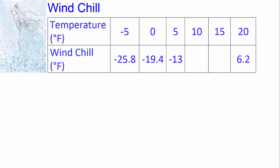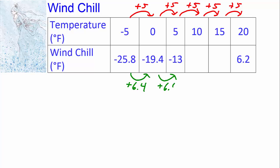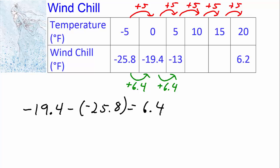The top row is going by 5s and the bottom row is going by 6.4. We could actually figure that out using subtraction. To go from negative 25.8 to negative 19.4, we need to add 6.4, because negative 19.4 minus negative 25.8 equals 6.4. Notice that negative 13 minus negative 19.4 also equals 6.4. So as the temperature increases by 5s, the bottom row increases by 6.4.